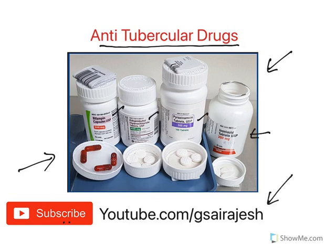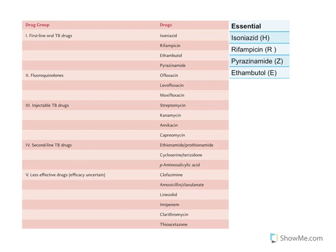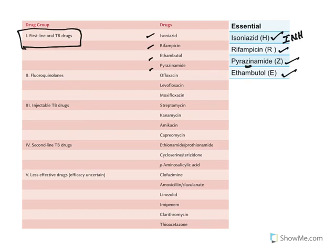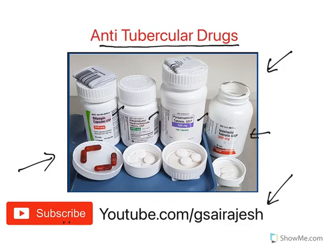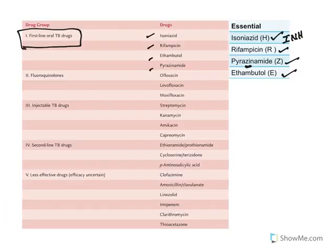According to the classical classification, first-line overall TB drugs are isoniazid, rifampicin, ethambutol, and pyrazinamide. They are known with certain codes: isoniazid (isonicotinic acid hydrazine) is coded as H, rifampicin as R, pyrazinamide as Z, and ethambutol as E. All of them have such codes on their boxes.